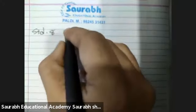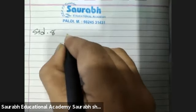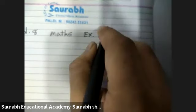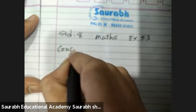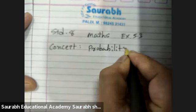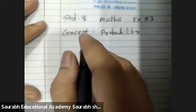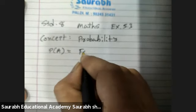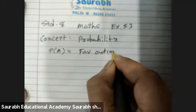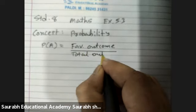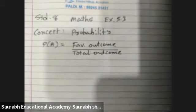Standard 8, Maths, Exercise 5.3. Concept: Probability. Formula: P of A is equal to favorable outcome upon total outcome.